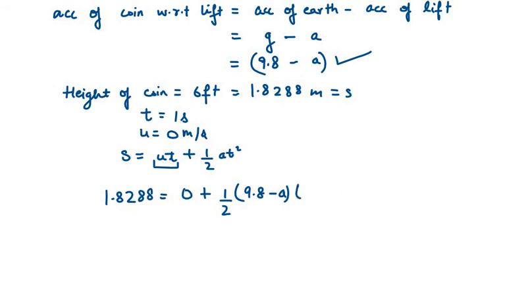Times T squared, which is 1 squared. So 1.8288 equals half times 9.8 minus A. Moving the 2 to the left hand side, you get 1.8288 times 2 equals 9.8 minus A.